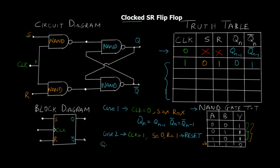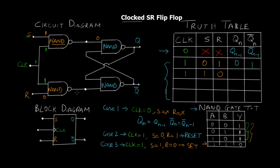In case three, clock is one, S equals one and R equals zero - the set state. Since clock is one, both first NAND gates are activated and output depends on S and R. One and one gives zero from the upper NAND gate, and one and zero gives one from the lower NAND gate. For the upper SR flip-flop NAND gate, with input zero the output Q equals one. This one fed back gives Q̄ equals zero. So the output is one and zero - the set state.